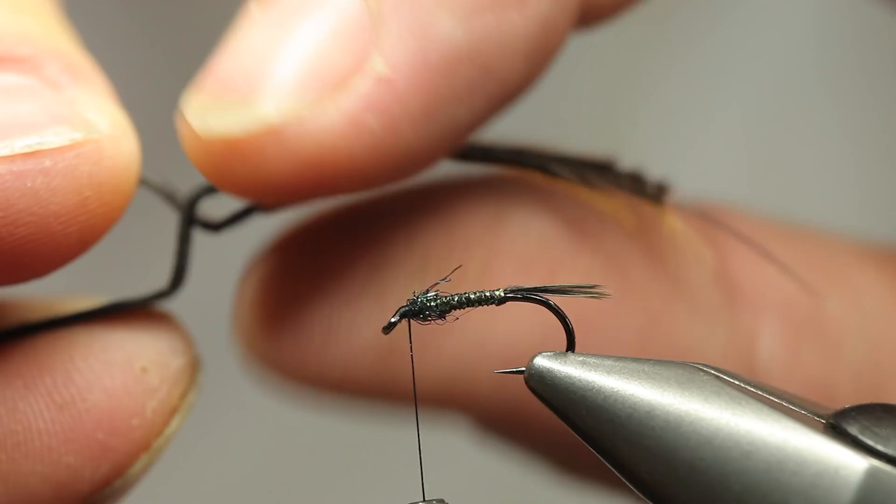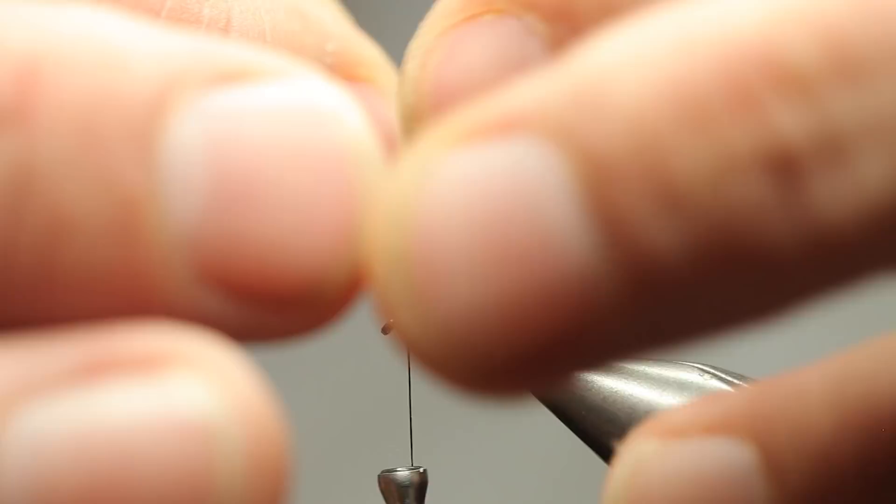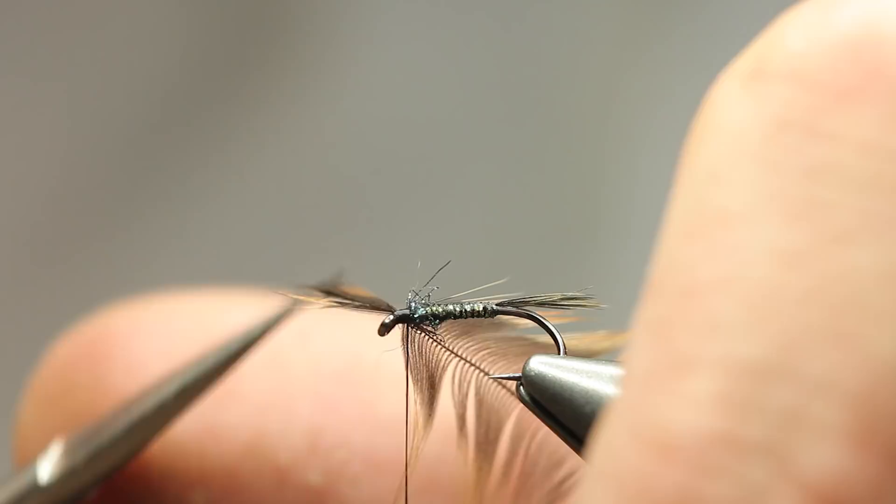And we're going to tie that in. Get rid of this, and with a stem then it gives you a nice purchase for your hackle pliers.